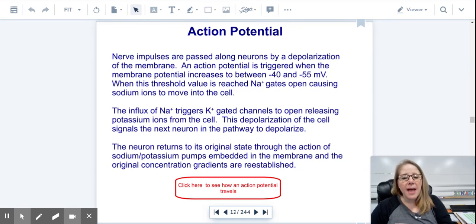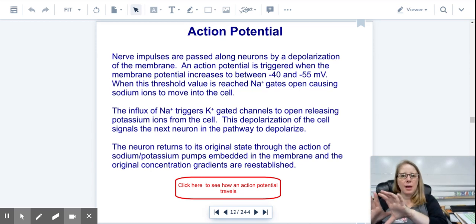Those action potentials are passed on by the neurons depolarizing. As the action potential triggers the membrane potential, it goes to negative 40 to negative 55 millivolts. So it actually becomes more positive. When that happens, the threshold is reached, the sodium opens, and the sodium ions will rush into the cell. That's going to move passively now, and there's more on the outside than the inside. That influx of sodium triggers potassium gates to open, releasing the potassium. So now potassium gets to go the way it wants to, and that will depolarize the cell. Once that happens, then that impulse gets to travel to the next channel, and then it happens again. When it's going to an original state, the sodium-potassium pumps help get it back to that negative 60 to negative 80.